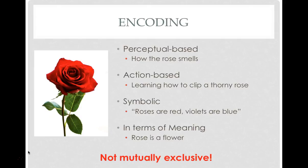One way to tackle conceptual knowledge is through encoding. Encoding involves multiple dimensions. Take a rose: we can encode it perceptually by how it smells, by its actions such as learning to clip a thorny rose, by its symbolism like the poem 'roses are red,' and by its meaning as a flower. These aren't mutually exclusive — all these pieces of information help you form a full concept of what a rose is.